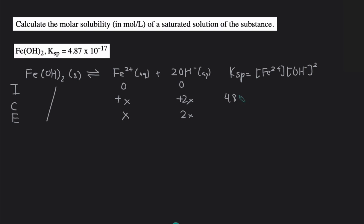Substitute the Ksp in. 4.87 times 10 to the negative 17 equals the concentration of Fe which was X and then the concentration of OH which was 2X squared. And then that will become 4X squared.